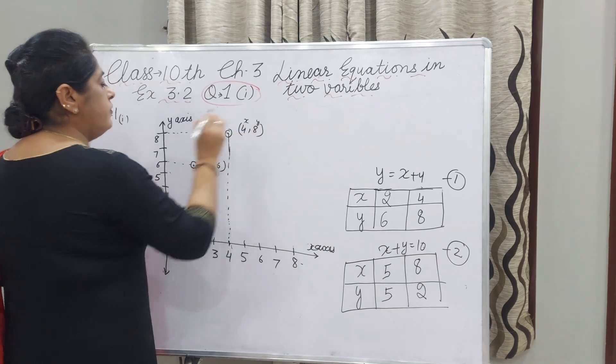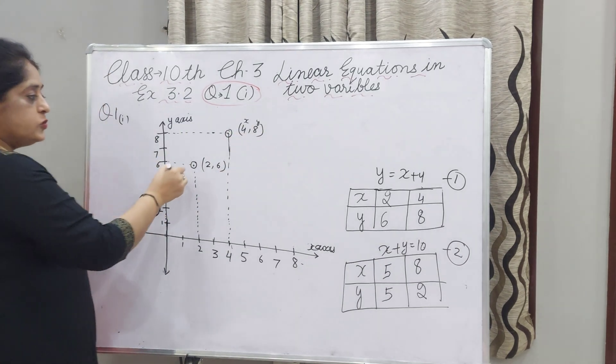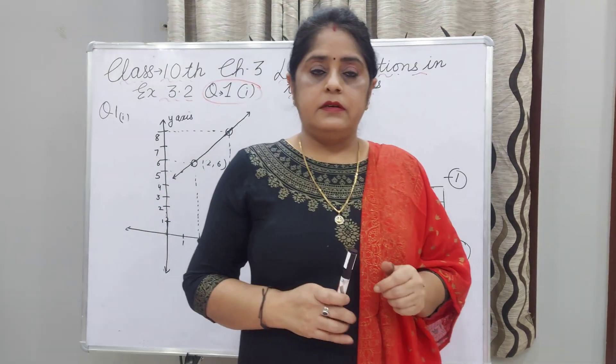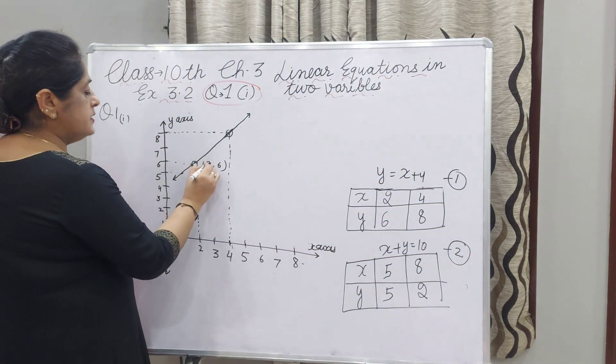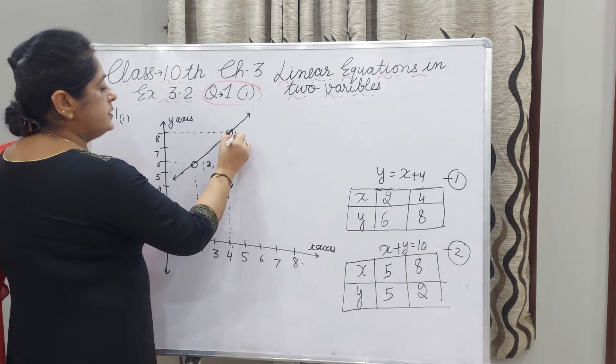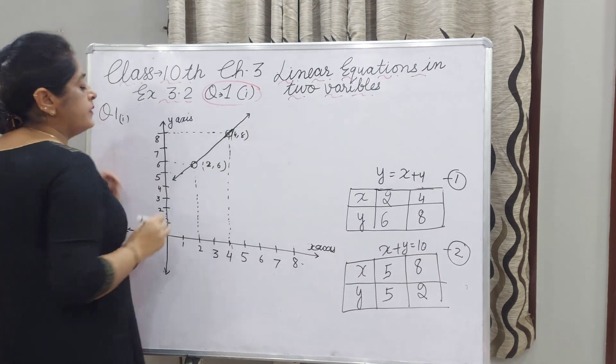Now we will join this line. As you can see, I have drawn the line through these points. One point is 2, 6 and the second point is 4, 8.